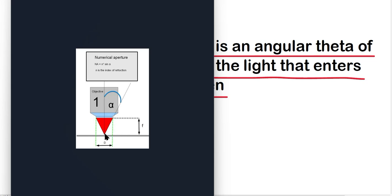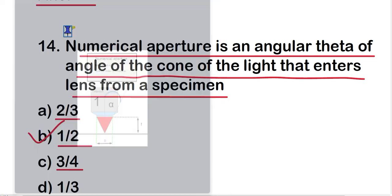Here the slide with the object is at the bottom and the objective lens is above it. A cone is formed between them; this cone angle is called theta, and the numerical aperture is n sine theta, where n is the refractive index of the medium (air) and theta is the half-angle of the cone formed between the objective lens and the slide. The numerical aperture determines how much light enters the objective lens.